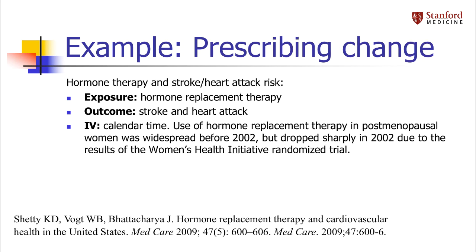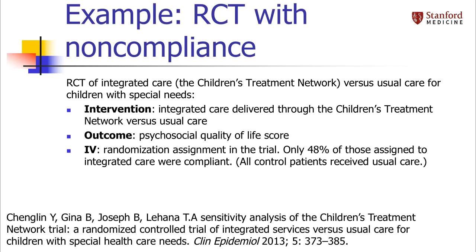Here's another example. There was a dramatic change in the prescribing of postmenopausal hormones in 2002 due to the results of the Women's Health Initiative study. Postmenopausal women had a high probability of being prescribed hormones before 2002, but a much lower probability after 2002. Researchers have exploited the variation in hormone use due solely to this prescribing change to study the relationship between hormone use and stroke, heart attack, and other outcomes. You can also use instrumental variable analysis as an alternative to intention-to-treat for randomized trials with noncompliance. In one example — a randomized trial of integrated care versus usual care for improving the psychosocial health of children with special needs — only 48% of those assigned to the integrated care group complied with treatment, so treatment assignment was treated as an instrumental variable.